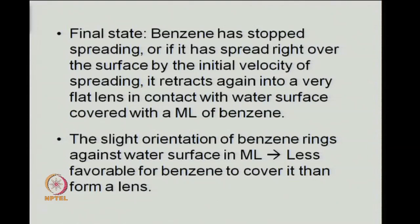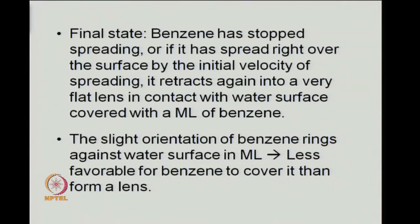The benzene present in the form of a film on water lowers the surface tension of water by about 10.4 dynes per centimeter, and therefore we have this final spreading coefficient turning out to be negative. In the final state, benzene has stopped spreading further, or if it has already spread over the surface, it retracts into a flat lens with a monolayer of benzene covering the surface in between this lens and the boundaries of the vessel.